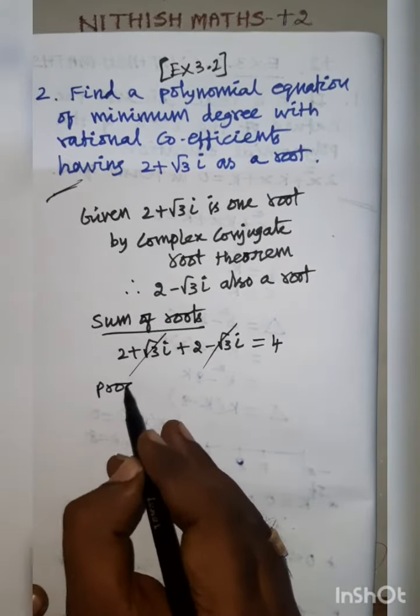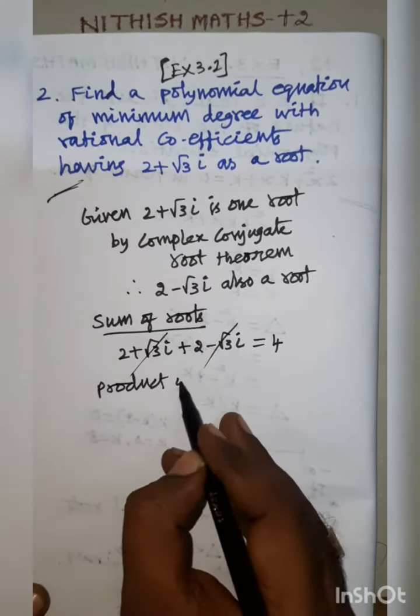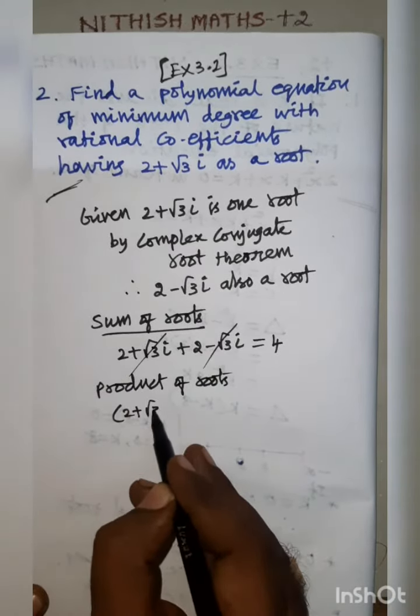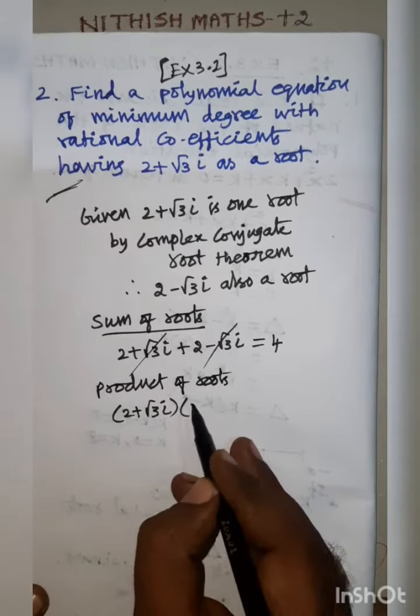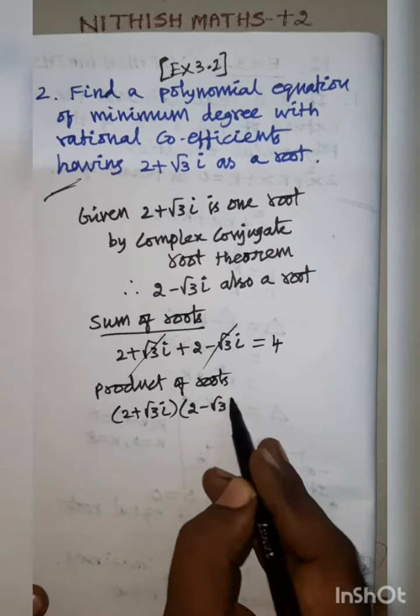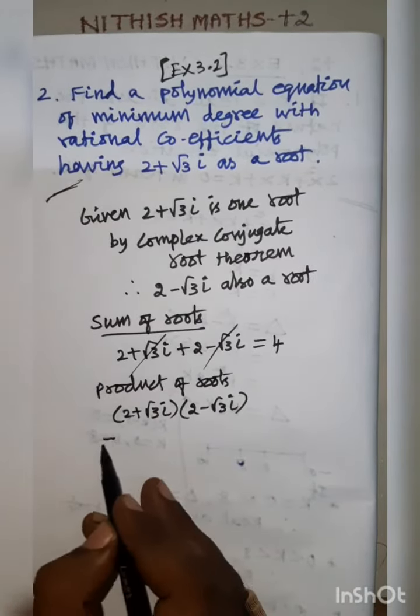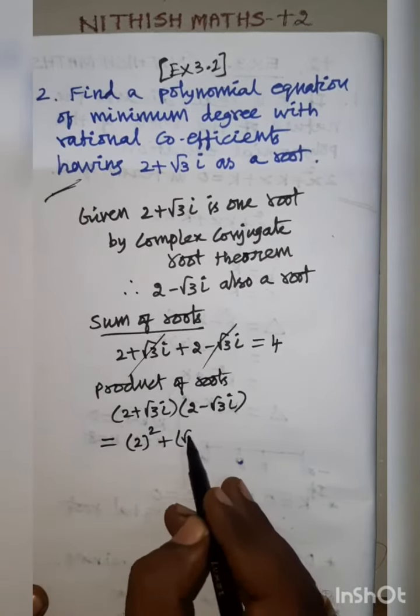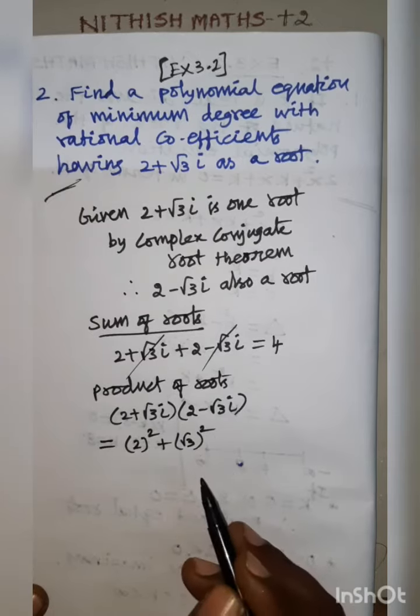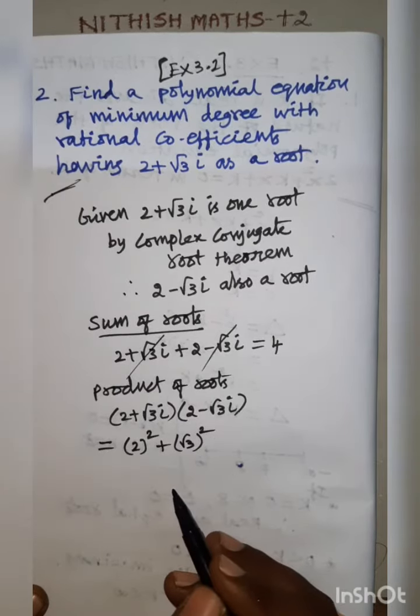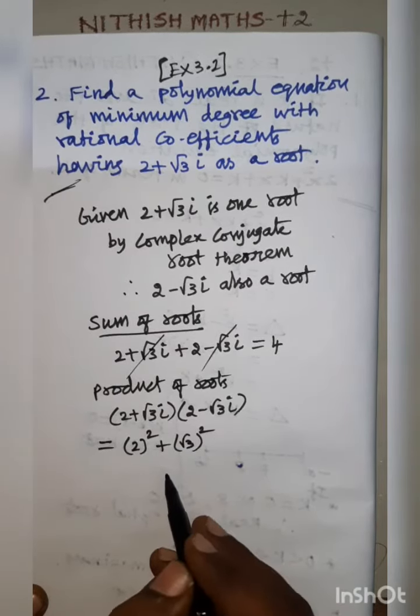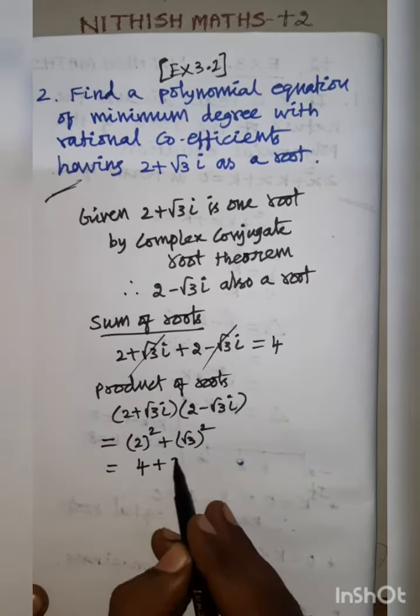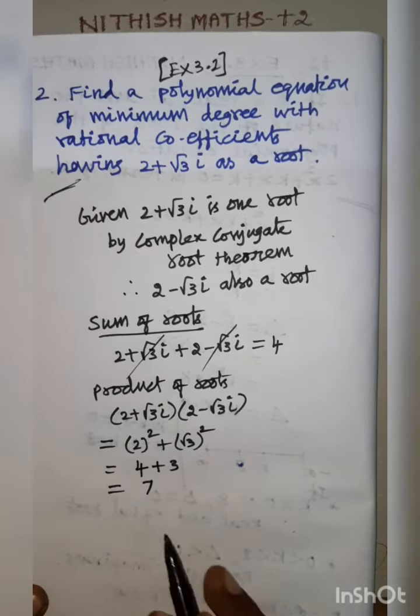Product of roots: 2 plus root 3 i into 2 minus root 3 i. Using a plus b into a minus b equals a square minus b square. For complex numbers a plus ib into a minus ib is a square plus b square. 2 square is 4, root 3 all square is 3, equals 7.